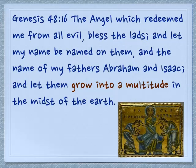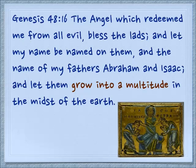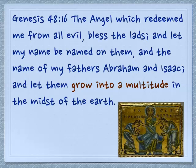Interestingly, in Genesis 48:16, Jacob is blessing Joseph's sons and says, 'The angel which redeemed me from all evil, bless the lads, and let thy name be named on them. In the name of my fathers Abraham and Isaac, and let them grow into a multitude in the midst of the earth.' The word for 'grow into a multitude' is a Hebrew word that only ever appears once, and it comes from the word for fish — they're going to multiply like fish. I'm sure you know that some people use that fish symbol, maybe on the back of their car — it represents the believers in Yeshua.